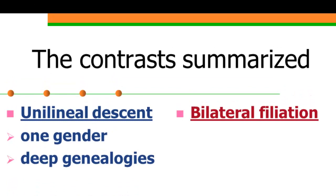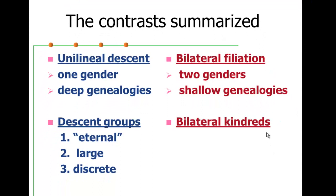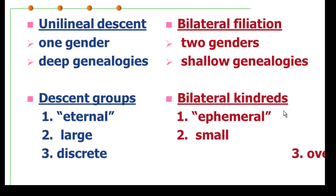Bilateral affiliation, on the other hand, involves two genders. Because of that, it's linked in traditional societies with very shallow genealogies. It produces what we call bilateral kindreds. A kindred is a network and has all the characteristics of a social network in that they're ephemeral. They're short-lived. They tend to be small and involve dozens of people and they have a great deal of overlap between them.